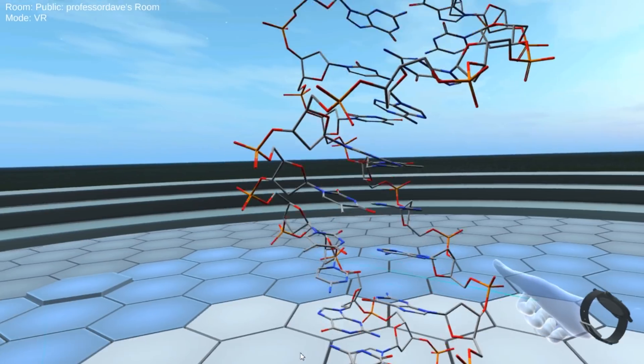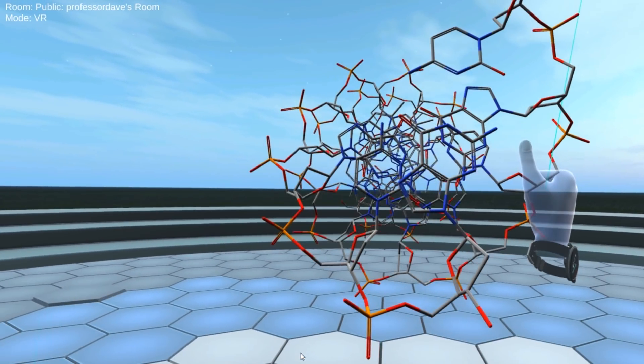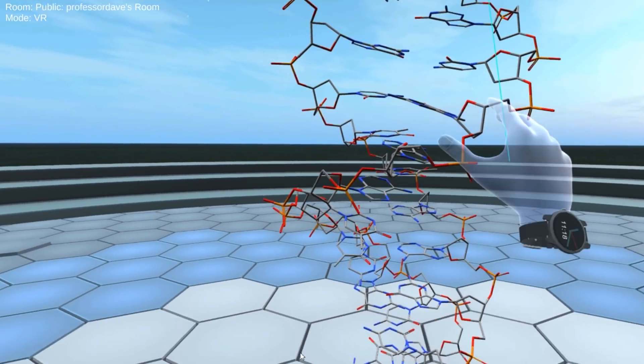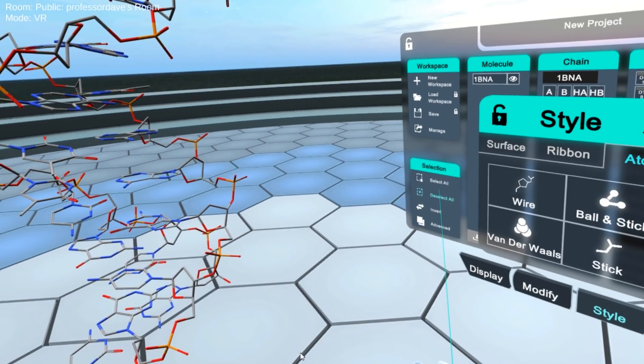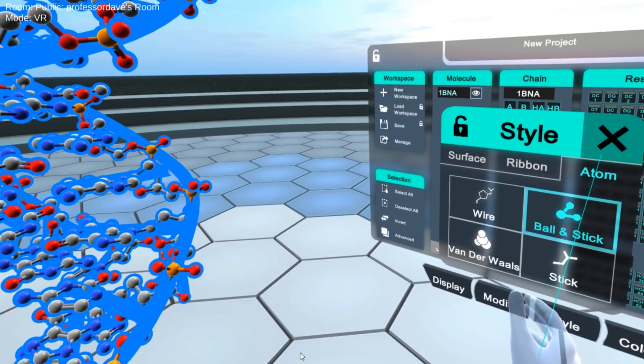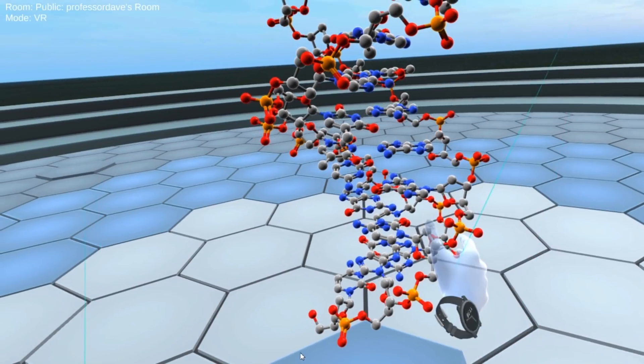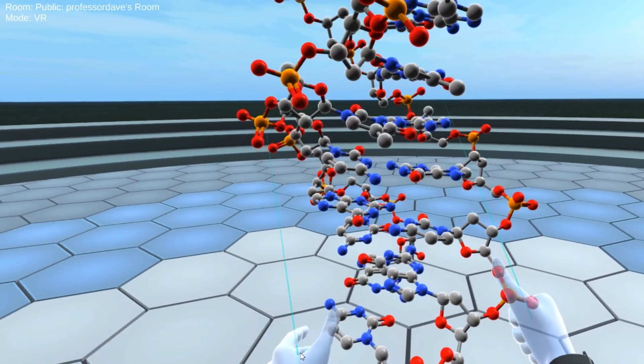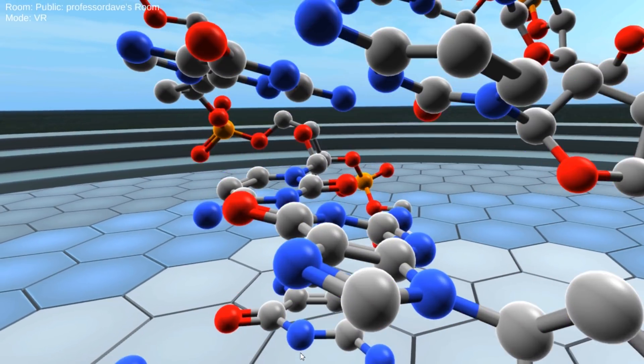Again, if we look at this maybe from the top here, we can see all of the base pairs in the center there and the phosphate backbone wrapped around. But let's go back to ball and stick. That is, I find, to be kind of the best way to look at these. And so there it is. There's DNA without the green ribbon and the waters. And let's really get in here now.